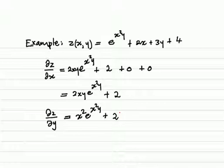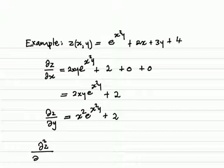We get 0 from 2x and 0 from the constant 4. Now let's look at the mixed derivatives in the two orders. That is delta squared z over delta x delta y.